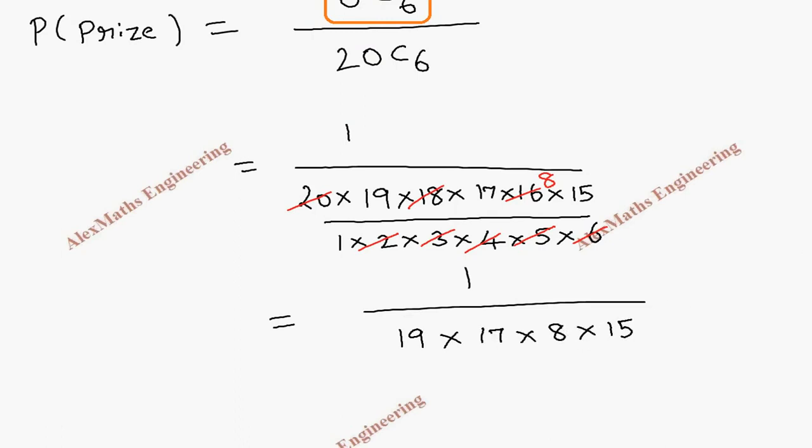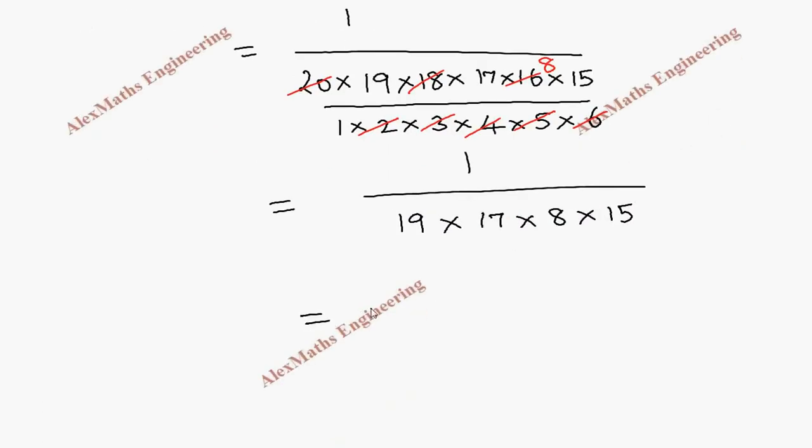...18 into 15. After multiplication we get 1 by 38,760.